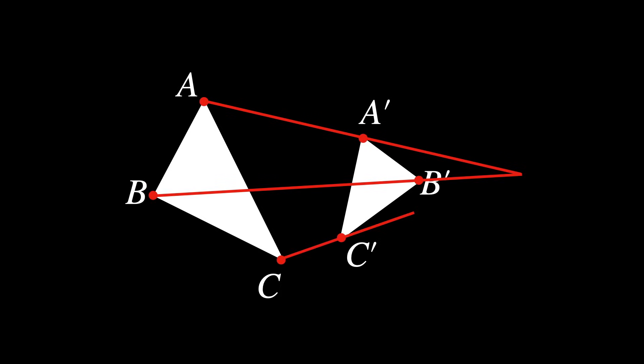Label the vertices of the first triangle A, B and C, and the vertices of the second triangle A', B' and C'. Draw lines connecting the corresponding vertices of the two triangles, so from A to A', from B to B', and from C to C'.